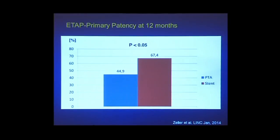The result at 12 months showed primary patency by duplex of 44.9% for PTA and 67.4% for stent. So neither number is terrific. Both dealt with lesions shorter than SFA trials, and neither PTA nor primary stenting quite hit the mark we expect for SFA. This tells you something about the popliteal — a treatment that seems to work better in the SFA doesn't work as well in the popliteal.